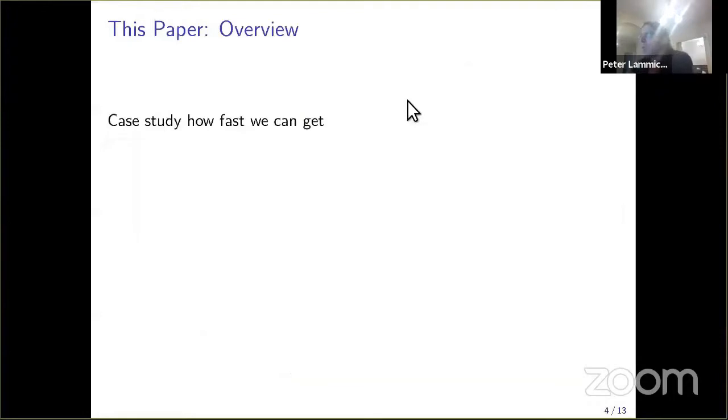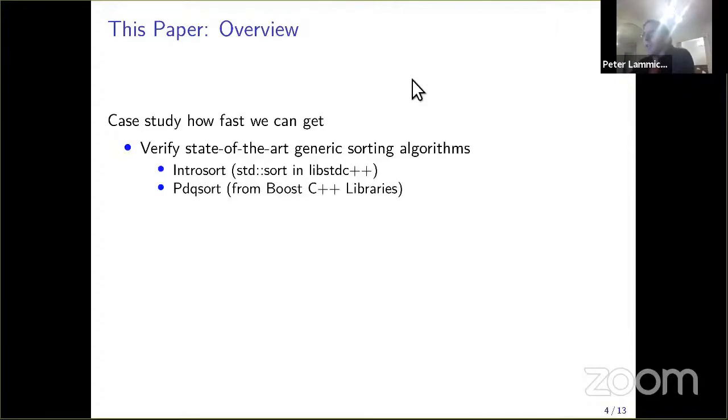This paper is about a case study, how fast can we get. We chose generic sorting algorithms, which represent a sweet spot. On one hand, they have very sophisticated and highly optimized state of the art implementations. We chose the introsort implementation from the GNU standard C++ library and PDQ sort from the Boost libraries. On the other hand, they are not overly complicated.